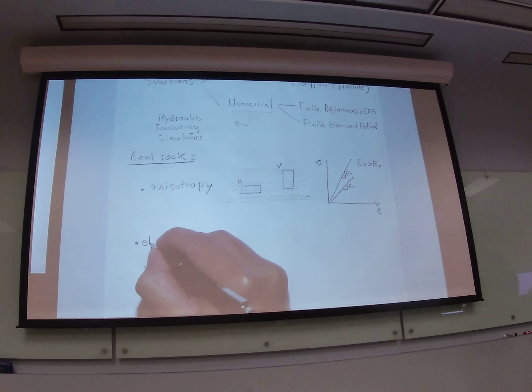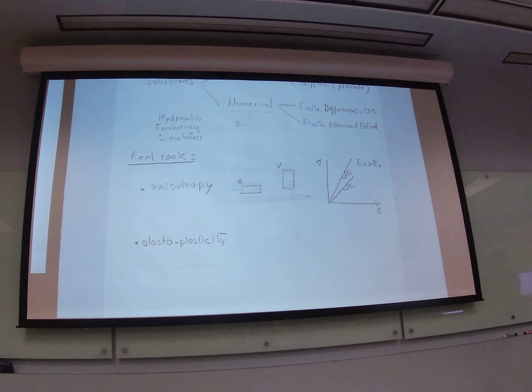Usually we also, together with elastic strains, we have plastic strains. And what that means is that the elastic part is recoverable deformation. The plastic part is irrecoverable deformation.